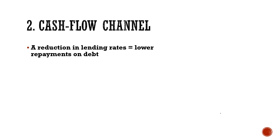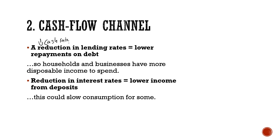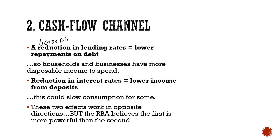The second channel is the cash flow channel, which is slightly different. If there is a reduction in lending rates, this will lead to lower repayments on debt — lending rates are cheaper, so less repayments — meaning households and businesses have more disposable income to spend. On the other hand, a reduction in interest rates from a lower cash rate means people get less income from deposits and savings, which could slow consumption for some people. These two effects work in opposite directions, but the RBA thinks the first effect — cheaper lending rates — is more powerful than the second.